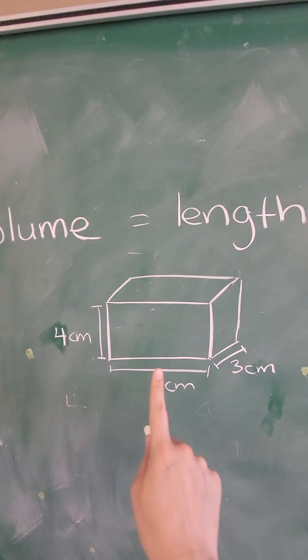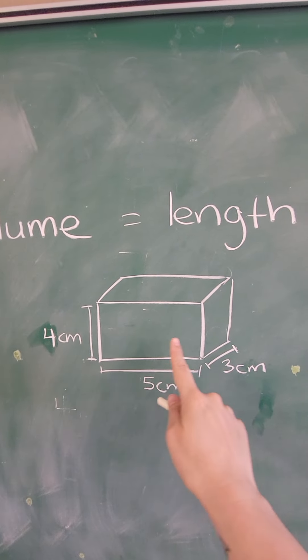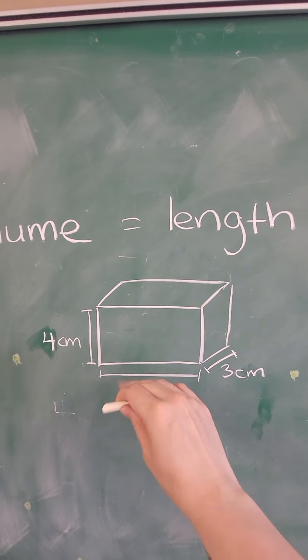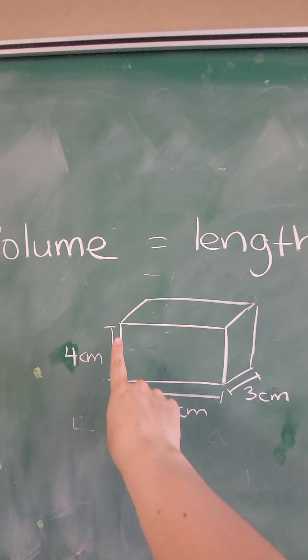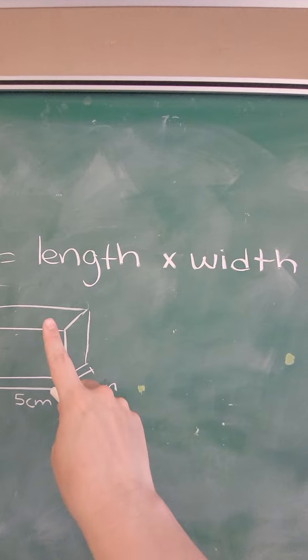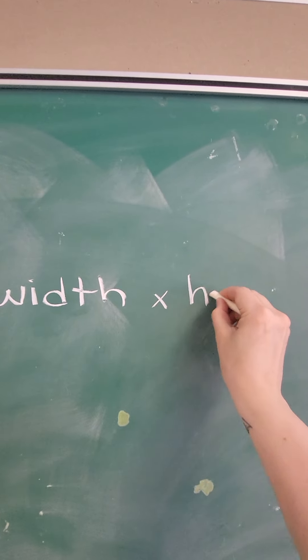So length times width would be just the area of that invisible rectangle at the bottom, but we want to know how much space is actually inside this 3D shape. So we have to add another step. Length times width times the height.